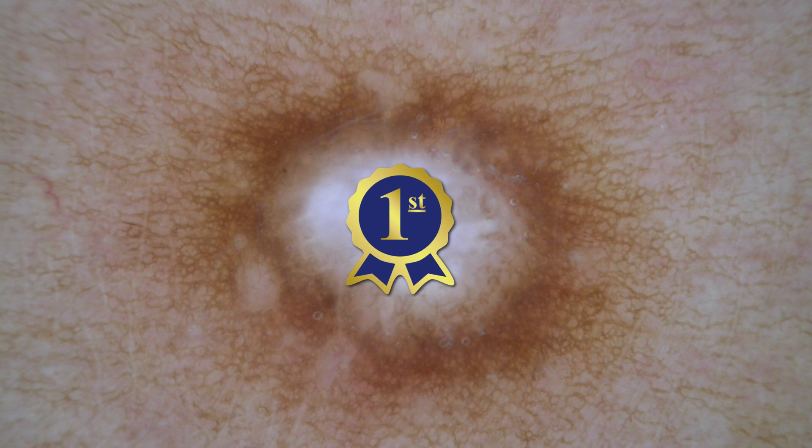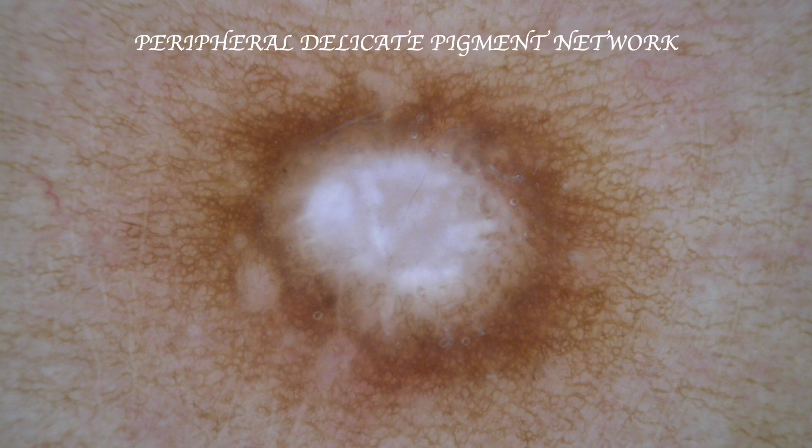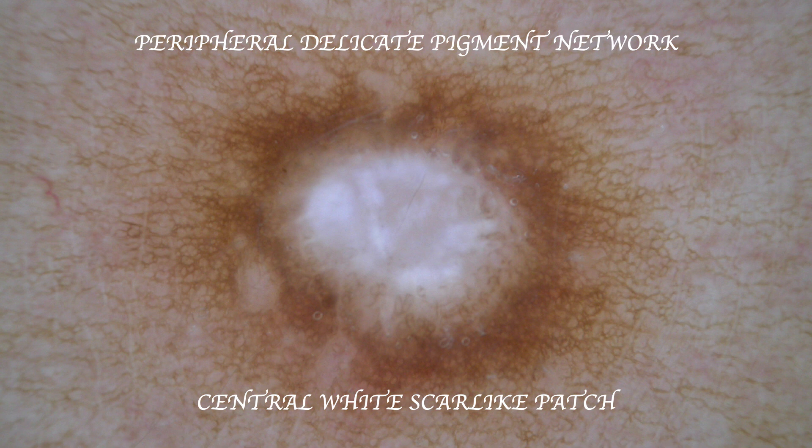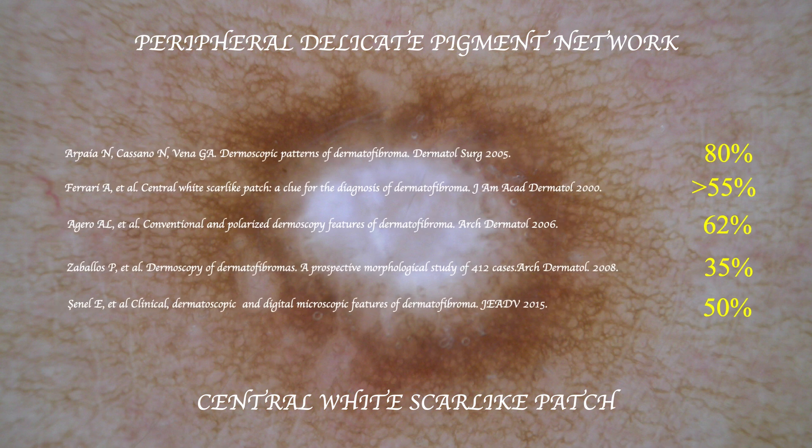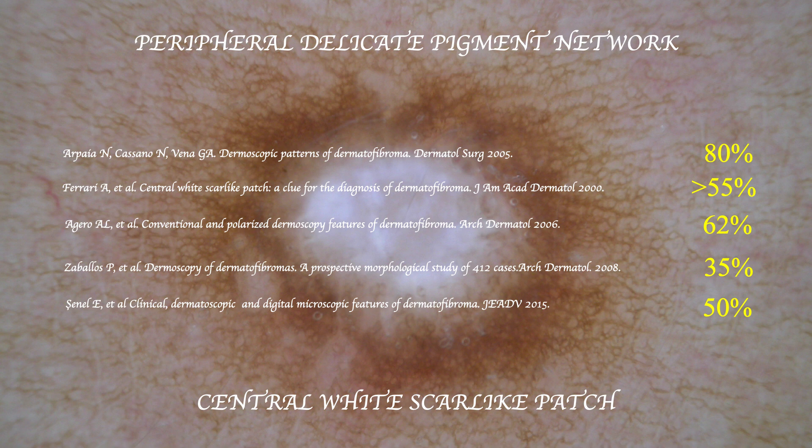As you probably all know, this is the most common and usual pattern of dermatofibromas. This pattern is composed of two structures: a peripheral delicate pigment network and a central white scar-like patch. This pattern has been described as the typical and most common dermoscopic appearance of dermatofibromas in medical literature.